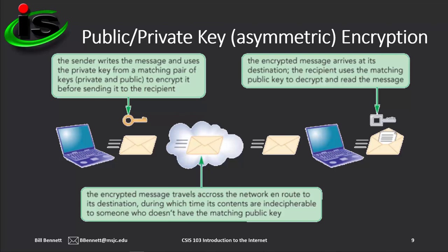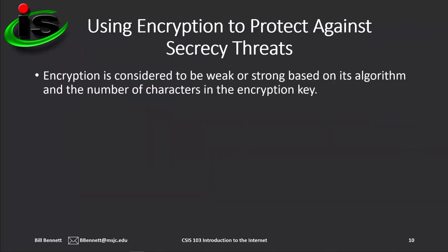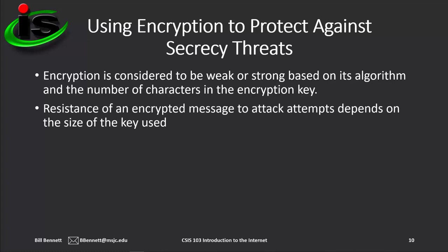Public key encryption, on the other hand, uses two different keys to encrypt messages. When using public key encryption, also called asymmetric encryption, these different keys operate as a pair. A private key, also referred to as a secret key, is known only to one party, and a public key is known to everyone. Messages encrypted with a private key must be decrypted with the matching public key, and vice versa. Encryption is considered to be weak or strong based on its algorithm and the number of characters in the encryption key. The resistance of an encrypted message to attack attempts, also known as the key's strength, depends on the size of the key used in the encryption procedure.